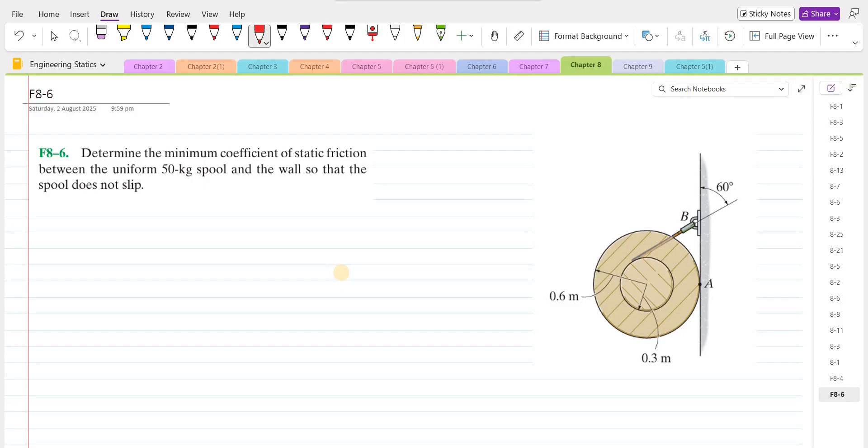Welcome back to the solutions manual. In this video, we will solve the problem F8-6 from R.C. Hibbeler Engineering Statics 14th edition. According to this problem, we have to determine the minimum coefficient of static friction between the uniform 50 kg spool and the wall so that the spool does not slip.